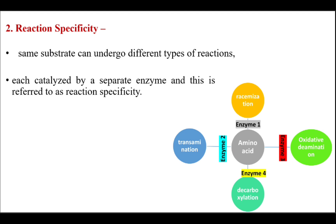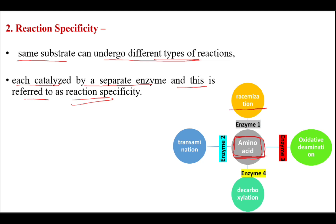Next is reaction specificity. The same substrate can undergo different types of reactions, provided each reaction is catalyzed by a separate enzyme. For example, an amino acid can undergo racemization, transamination, decarboxylation, or oxidative deamination, with a different enzyme for each reaction.